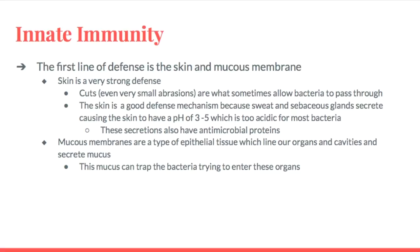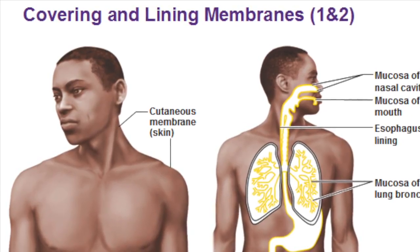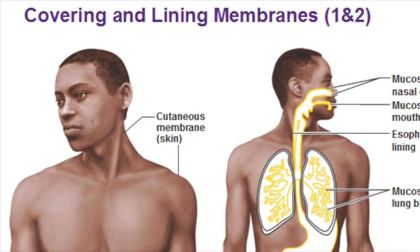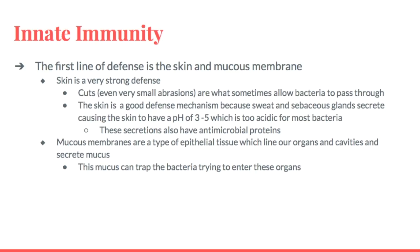Going into more depth about innate immunity, there are two lines of defense. The first line includes the skin and the mucous membranes, which are the external defenses. Skin is the absolute first defense because the sweat and sebaceous glands secrete substances that cause the skin to have a pH of around 3 to 5, which is way too acidic for many bacteria to survive. These secretions also contain antimicrobial proteins that kill the bacteria.